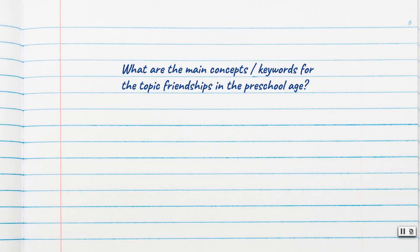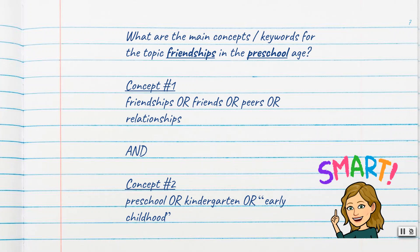What are the main concepts or keywords for the topic 'friendships in the preschool age'? Friendships and preschool. For the first concept — friendships — other terms you may want to search are friends, peers, or relationships, and this will help to expand your result list. I'll combine my concepts using the Boolean operator AND, and the second concept is preschool or kindergarten or early childhood.